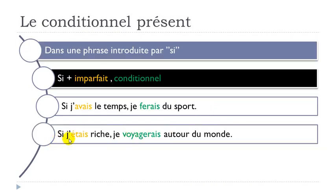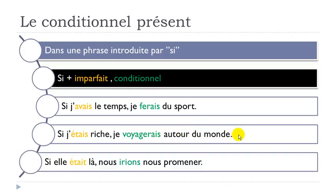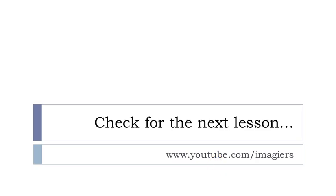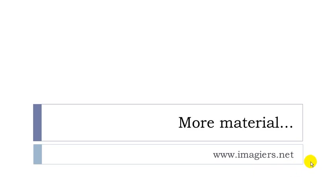More examples of the si structure: si j'étais riche, je voyagerais autour du monde (if I were rich, I would travel around the world). Si elle était là, nous irions nous promener (if she were here, we would go for a walk). Remember: aller becomes 'ir' in the conditional — nous irions. And se promener means to have a walk.